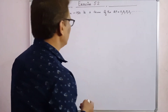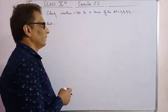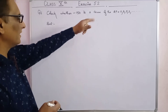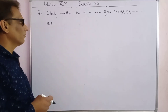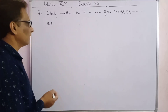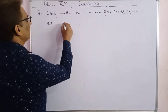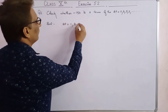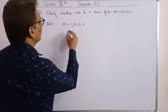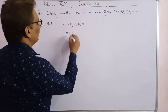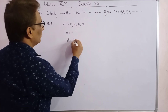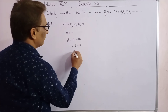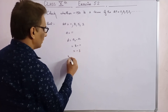Question 6: Check whether minus 150 is a term of AP 11, 8, 5, 2. Here a equals 11, d equals a2 minus a1 equals 8 minus 11 equals minus 3.